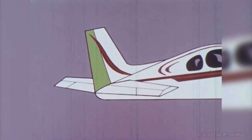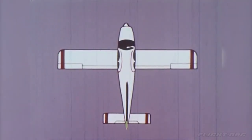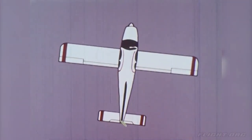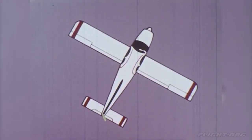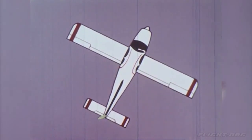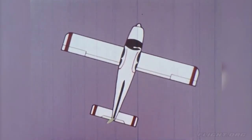The rudder at the rear of the vertical stabilizer swings left or right, moving the tail to the right or left. It would be a lot easier to understand the parts we have just been talking about if we could see them on an actual airplane.